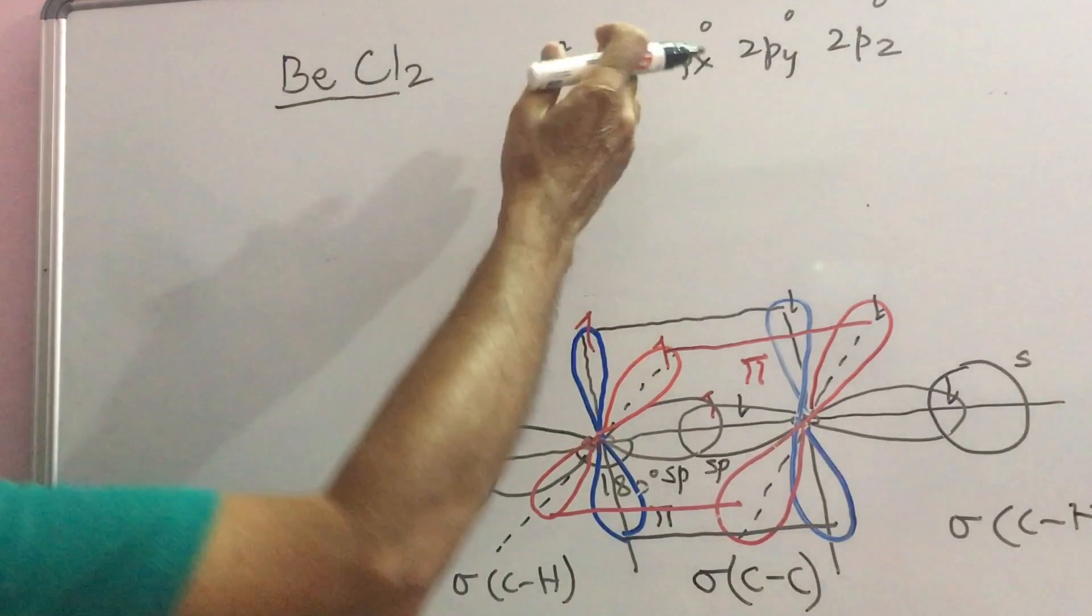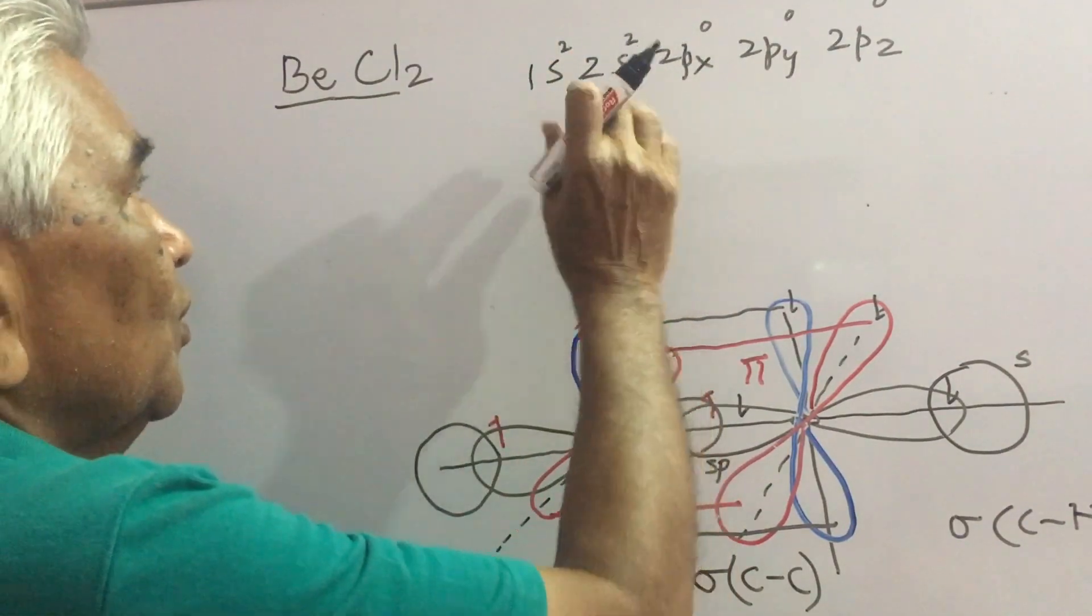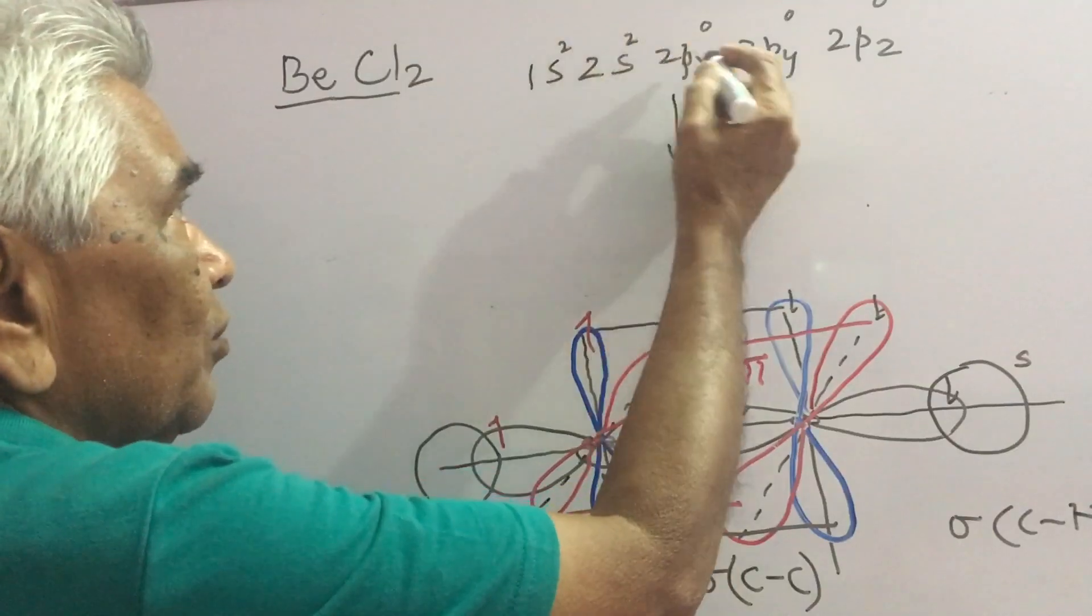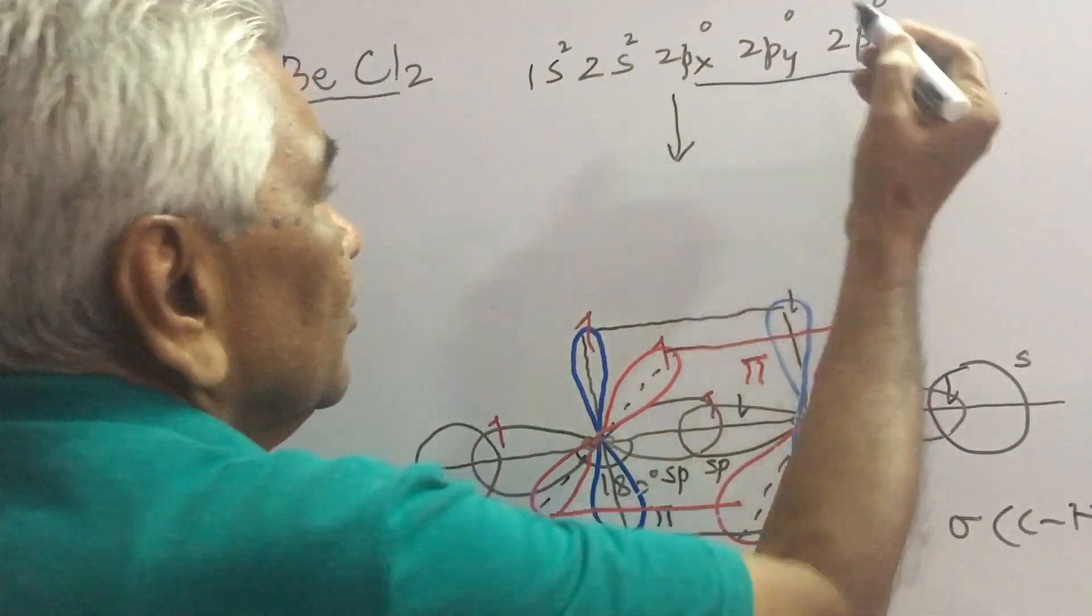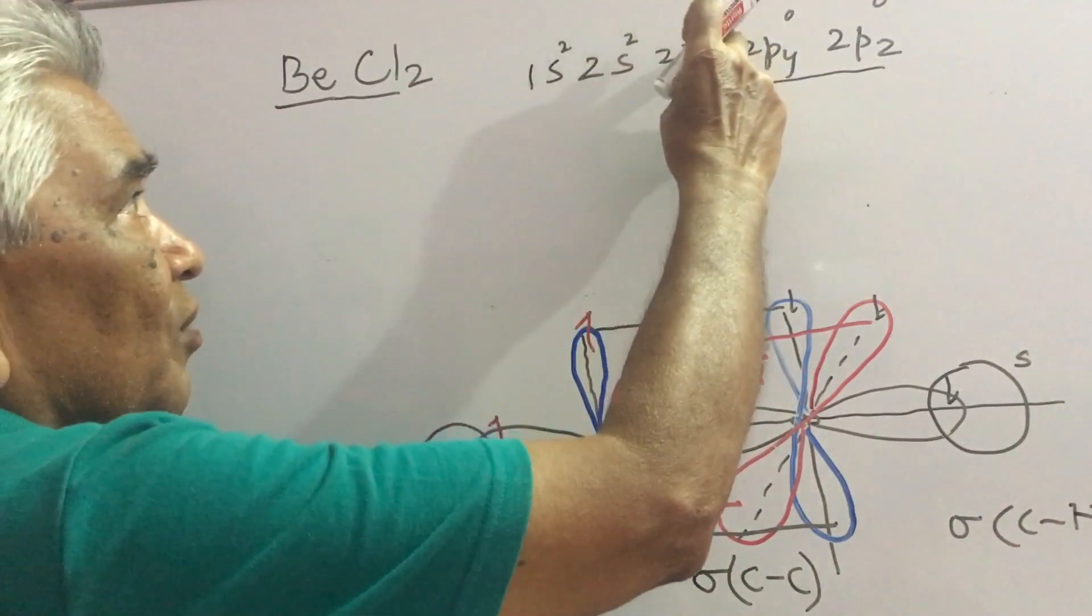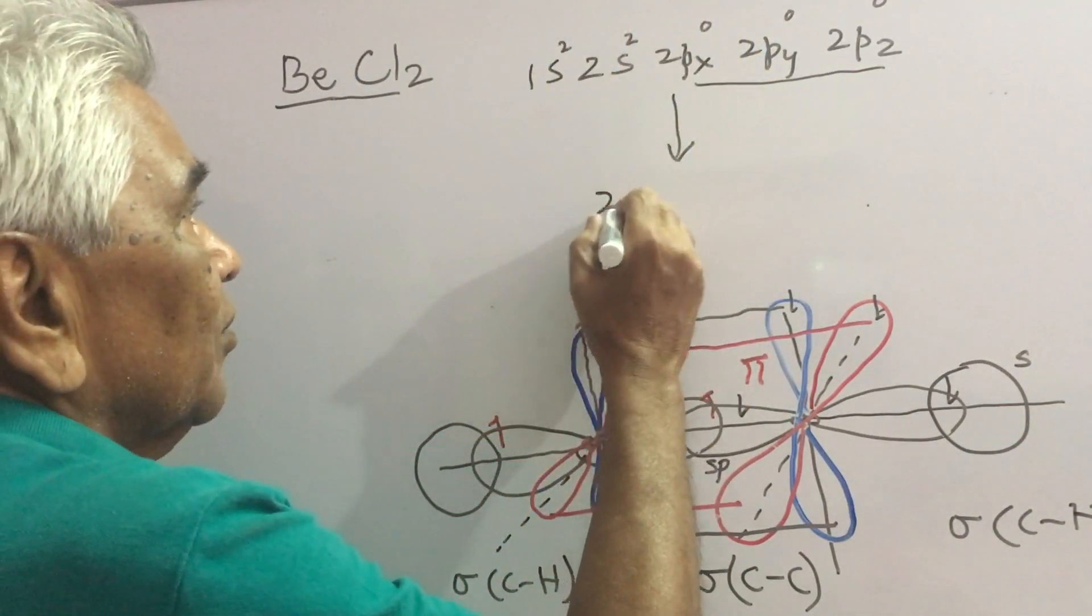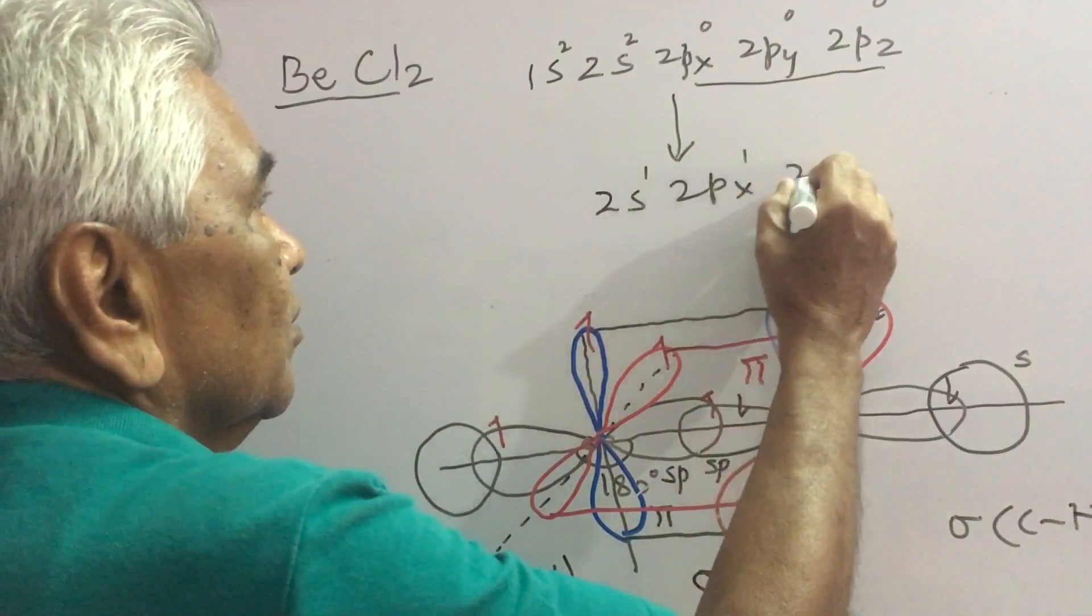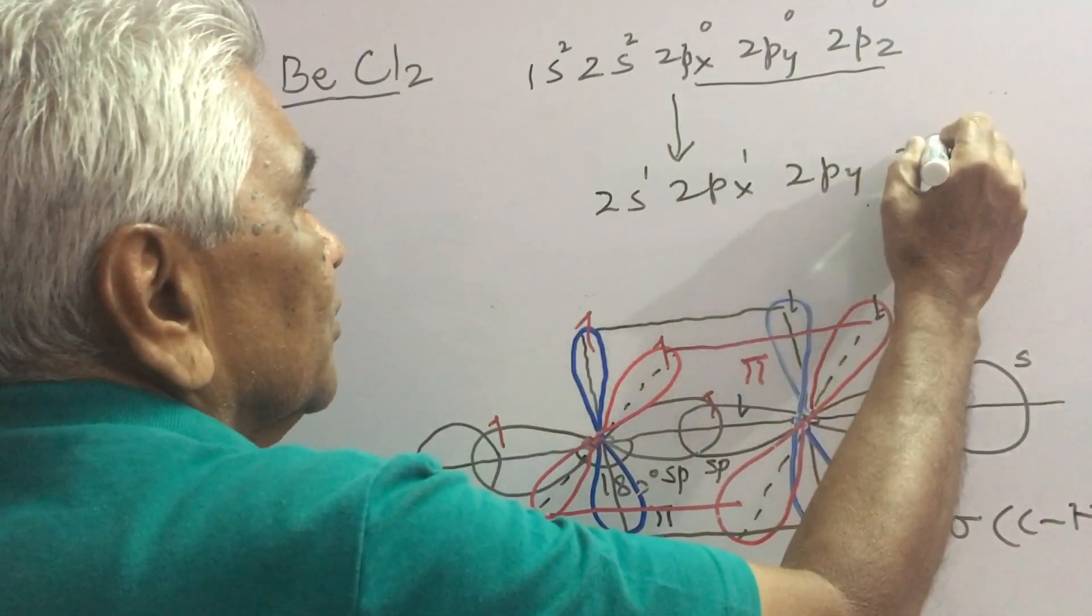It is actually bivalent because the available vacant p orbital receives one electron from this and you have 2s1, 2px1. These are vacant here.